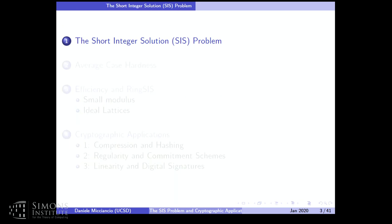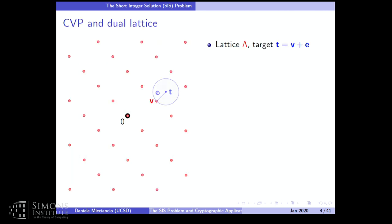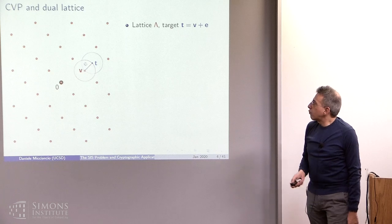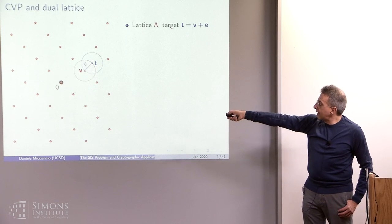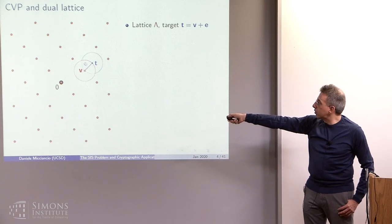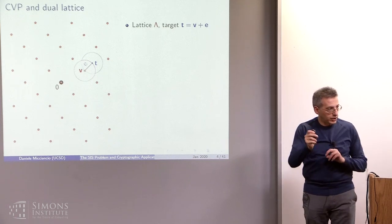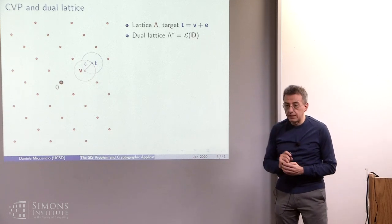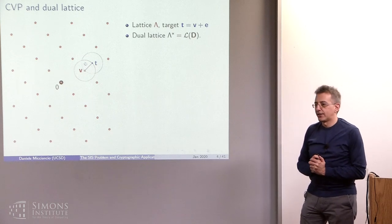So let's start with the SIS, or short integer solution problem. Before we get into the cryptographic definition, recall the geometry behind this problem, which also applies to LWE. These are problems associated to CVP, the closest vector problem, where you are given a lattice represented by a basis and a target point T, and you want to find a lattice vector which is close to the target. You can grow a ball around the target until it includes a lattice point. Equivalently, you can think of this target T as the result of starting from a lattice point and perturbing it with some error E, which is exactly the distance between T and that lattice. Yesterday you learned everything about a dual lattice, so let's use it.